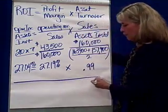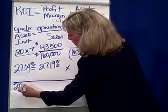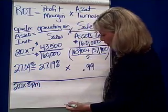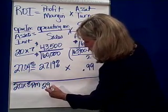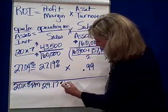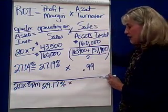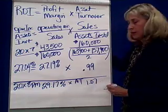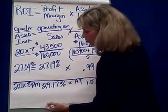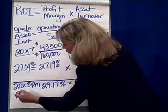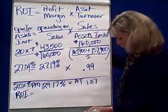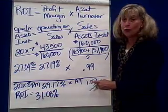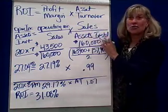For a check figure for 2000X8: the profit margin is 29.17%, and asset turnover is 1.07 times per year. Multiplying these together gives an ROI of 31.08% for 2000X8. Go ahead and complete problem P4 on profit margin and asset turnover.